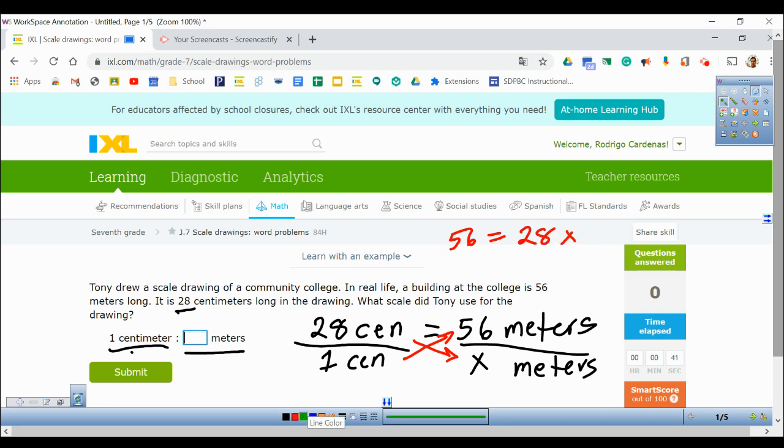Now, in order to get X by itself, I have to get rid of this 28. So to get rid of that 28, I divide both sides by 28. The reason why I divide is because, see here, I'm multiplying 28 times X, and the opposite of multiplication is division. So I divide both sides by 28, and I get this 28 cancels with this 28.